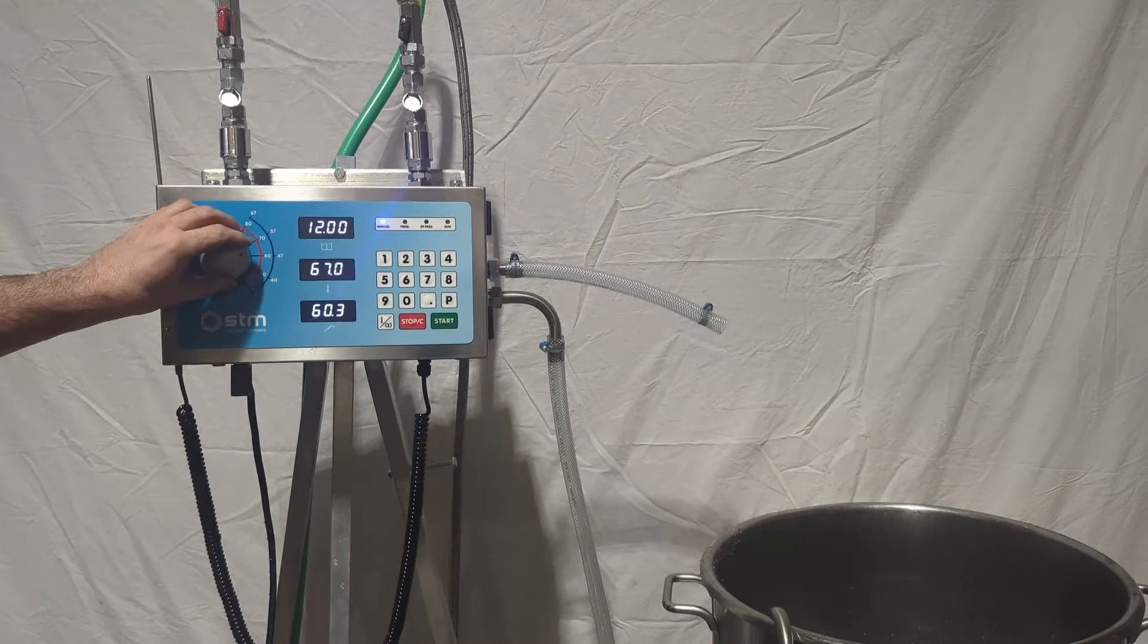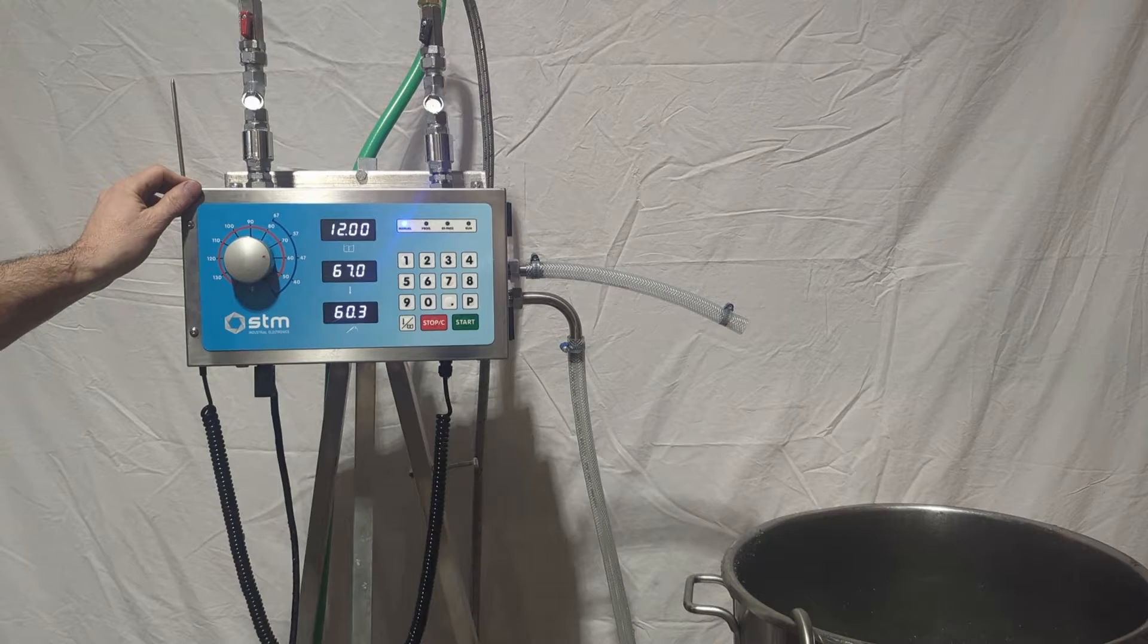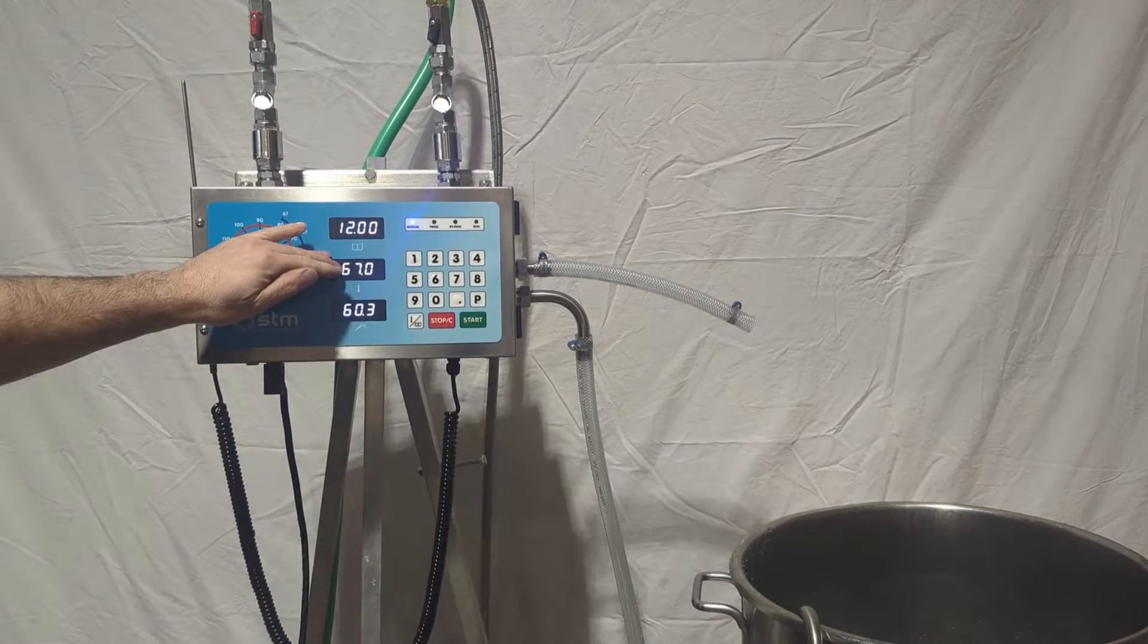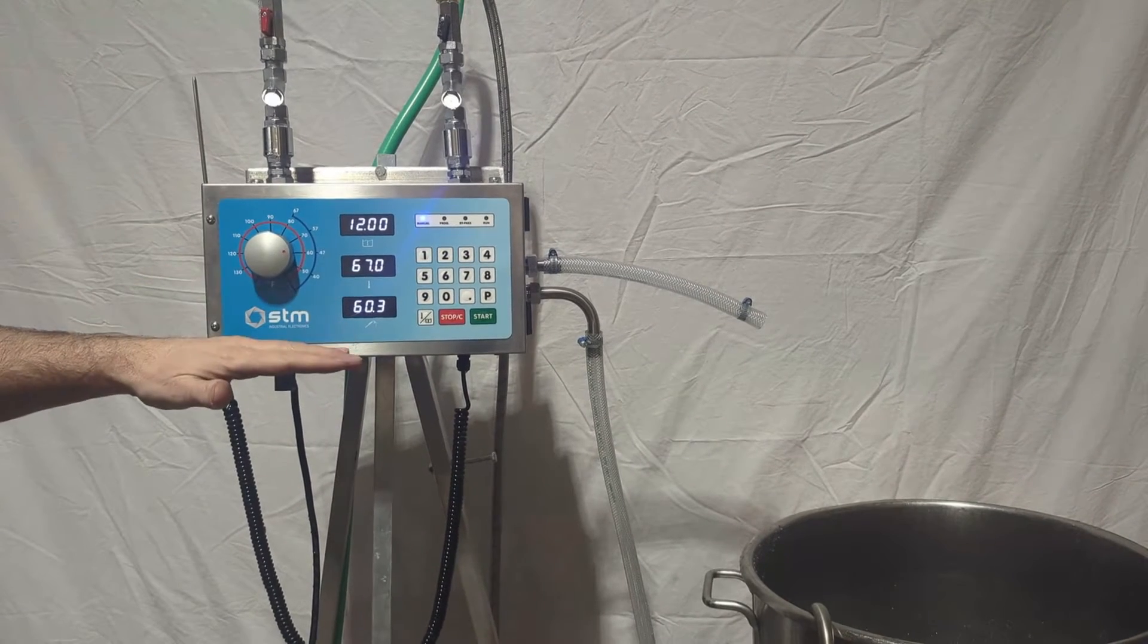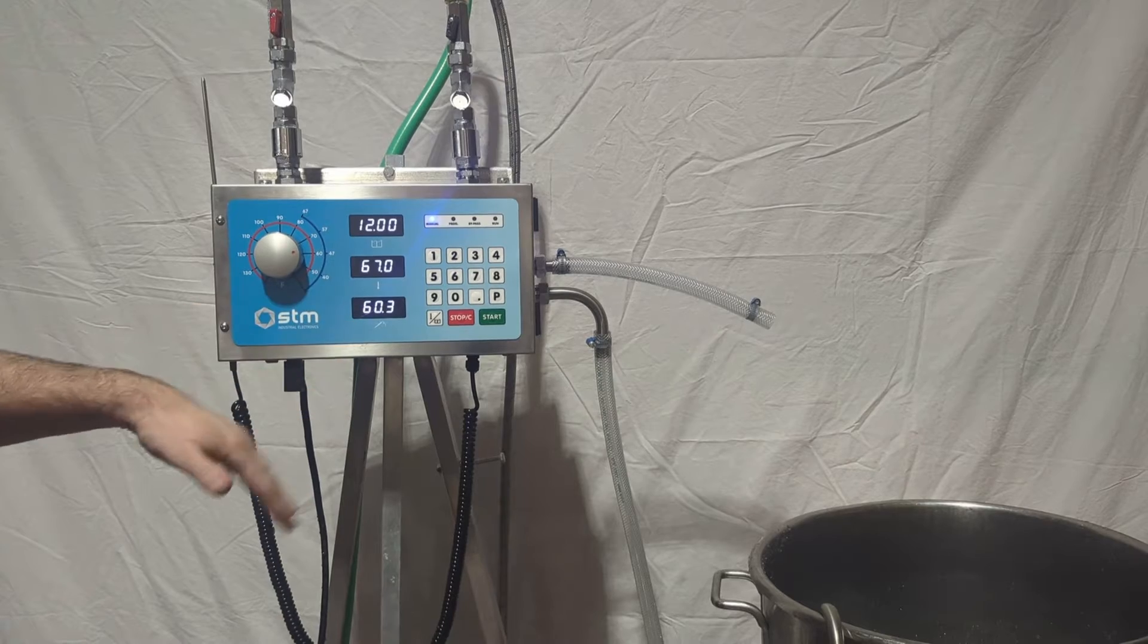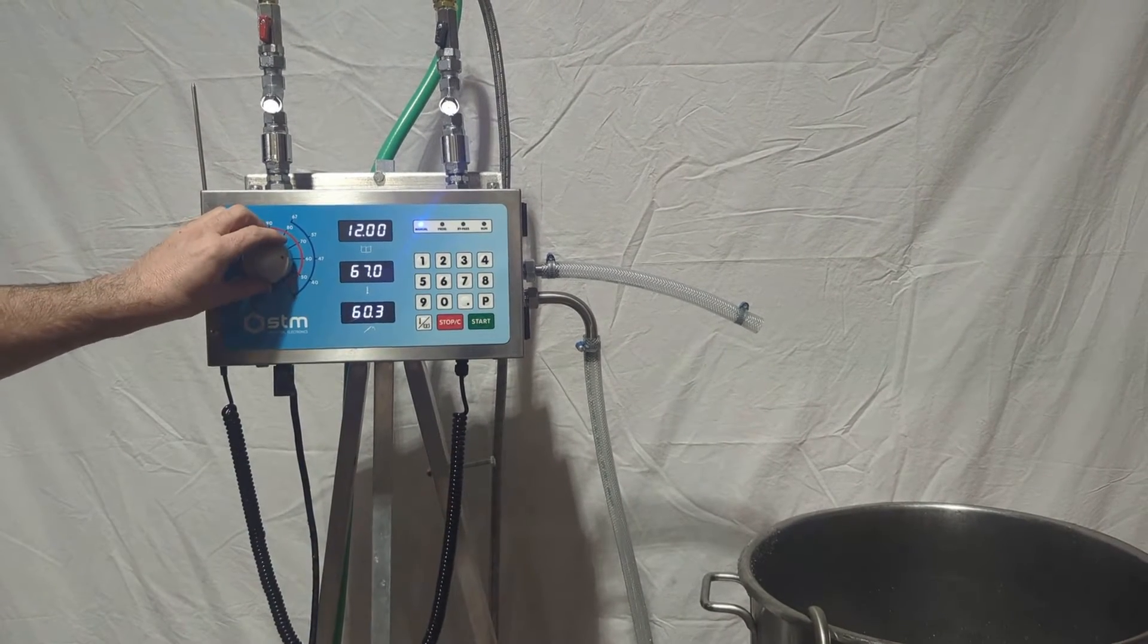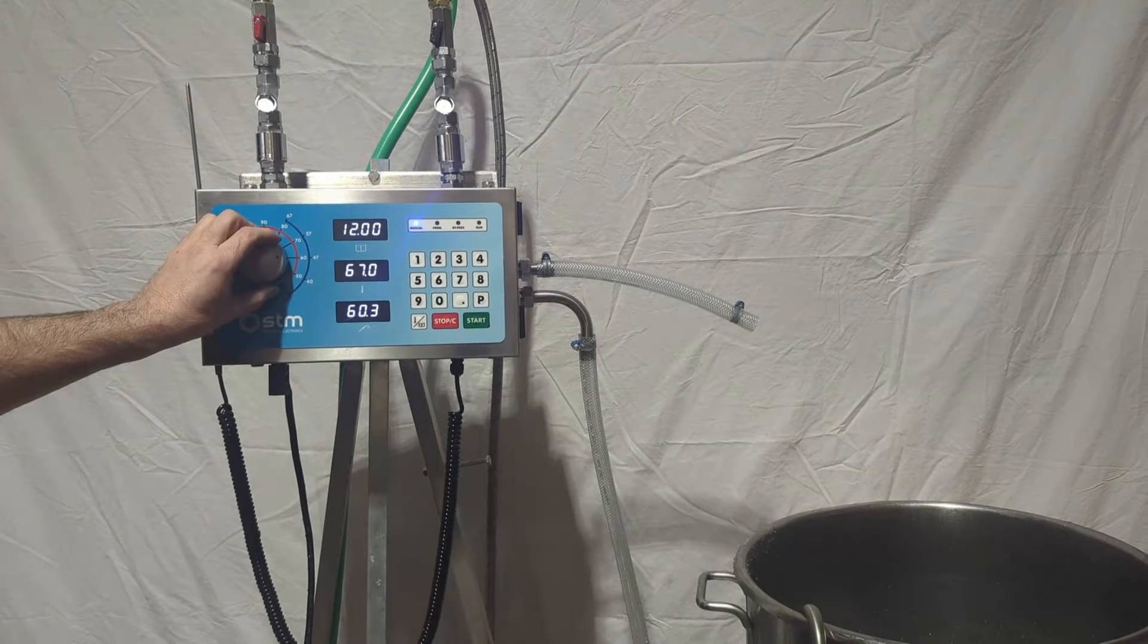We're going to discuss the STM 45A water meter. Some automatic water meters out there in the market, you can set your weight, you can set your temperature, you press start, they automatically hunt for your set water temperature and then automatically dispense by themselves. This particular model, the 45A, does not automatically hunt for the water.